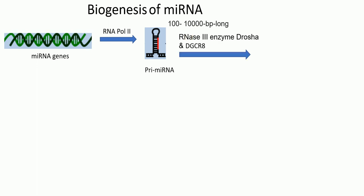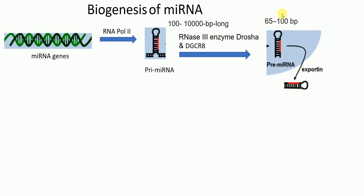These primordial or primary micro RNAs are recognized by the DGCR8 protein and are further processed by an RNase III enzyme called DROSHA. This cleavage results in precursor micro RNA, which is about 65 to 100 base pairs long. All of this — transcription by RNA polymerase II and the action of DROSHA and DGCR8 — occurs in the nucleus.